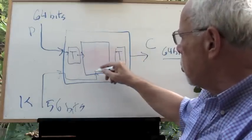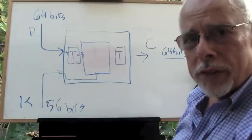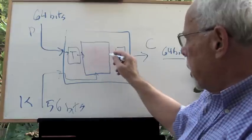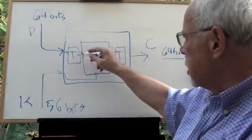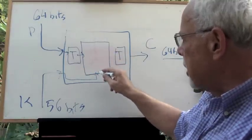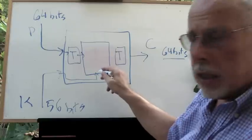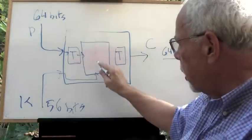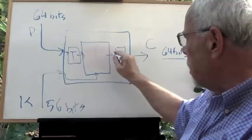Then you take the already mixed bits and you put them into the main sub-module of DES. We will open it later, but this sub-module is the one that gets the key inside. The key doesn't intervene here, it only comes here.